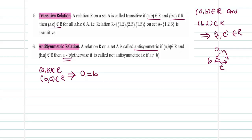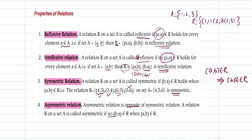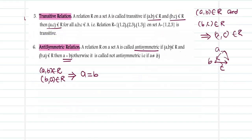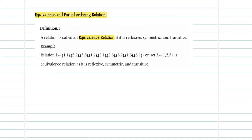The most frequently used relations are reflexivity, symmetricity, transitivity, and anti-symmetry, because we will be making use of them to define the next set of relations called equivalence and partial ordering. An equivalence relation is a relation that is reflexive, symmetric, and transitive.